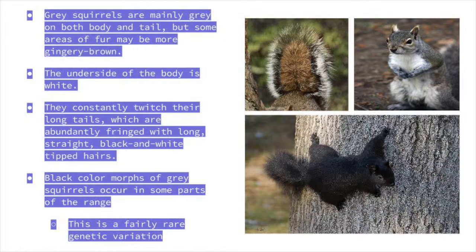Gray squirrels are mainly gray on both body and tail, but some areas of fur may be more gingery brown. The underside of the body is white. They constantly twitch their long tails, which are abundantly fringed with long, straight, black-and-white tipped hairs. Black color morphs of gray squirrels occur in some parts of the range — this is a fairly rare genetic occurrence.